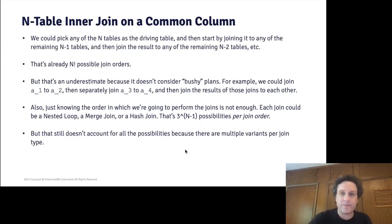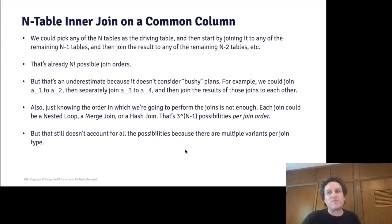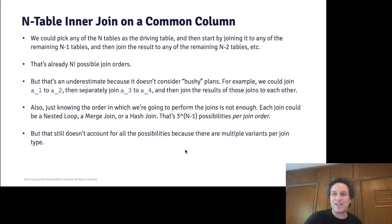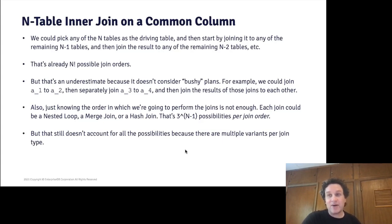That bushy case isn't counted in the N-factorial possibilities because there the tables are joined in one at a time, whereas in a bushy plan they come in as a clump of two or more. I looked for a formula for the actual number of join orders for N tables but couldn't find one I was totally convinced was correct. Someone mentioned it's the Catalan number, something like four to the N. What I know for sure is it grows faster than N-factorial. And that's just for the number of join orders.